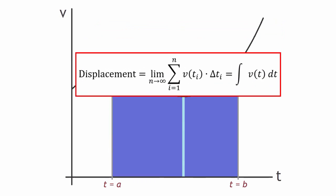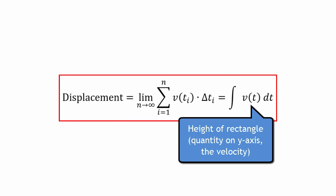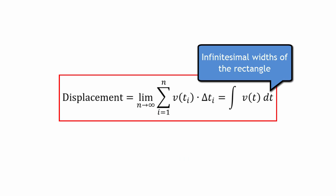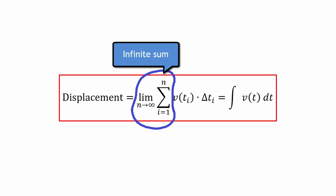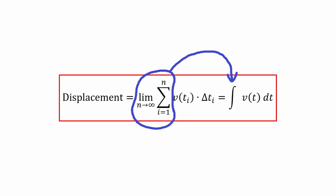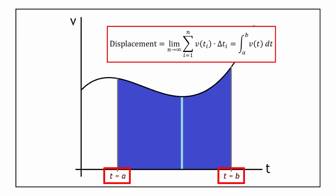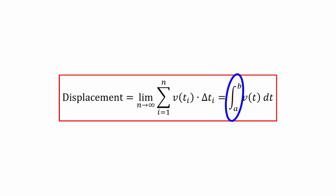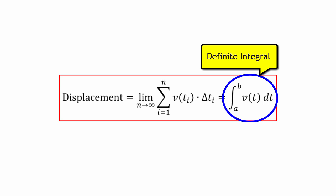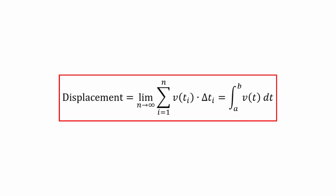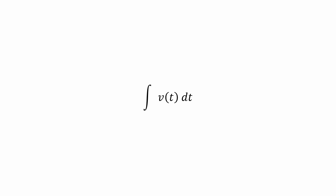To describe it with calculus, the area of each rectangle equals its height v times the infinitesimally small width dt. Because we're summing an infinite number of areas, rather than writing out the whole sum, we use a special symbol called the integral symbol. We can also write a and b at the integral sign to denote that we're summing over the time interval between a and b — this is what we call the definite integral, because it gives a definite number: the area under the curve. Without those numbers, we find what we call the indefinite integral.